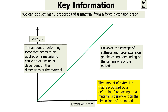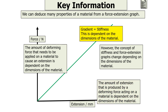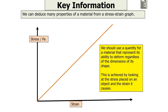The amount of extension produced by a deforming force is also dependent on the dimensions of the material. So whilst the gradient gives stiffness, it is fundamentally dependent on the dimensions of the object. We therefore need to quantify a value for a material that represents its ability to deform regardless of its dimensions. This is achieved by looking at the stress placed on an object and the strain that it causes.